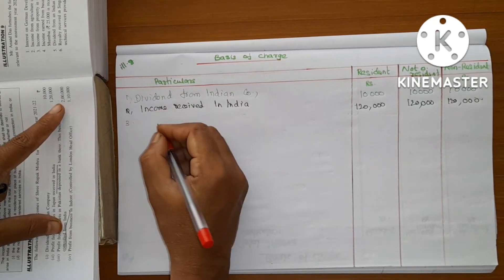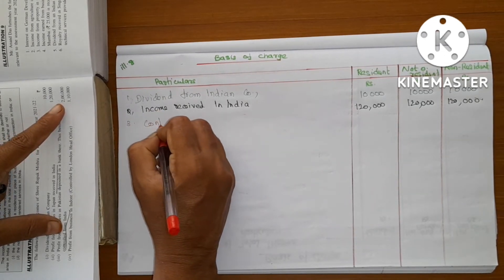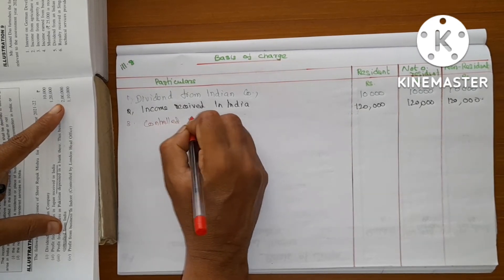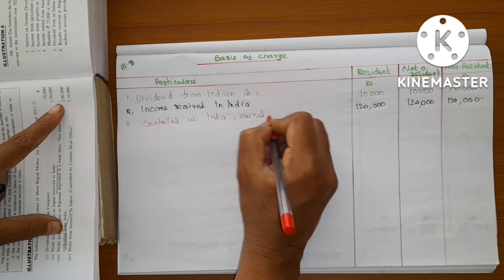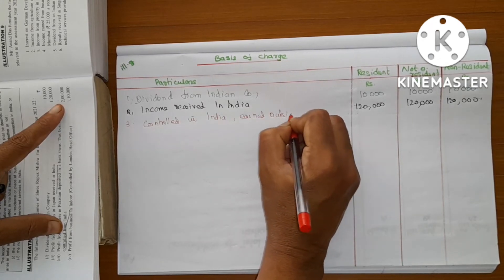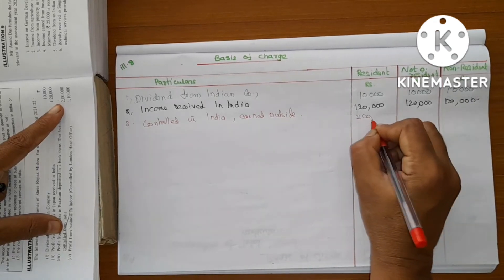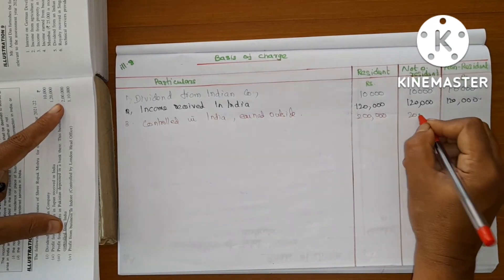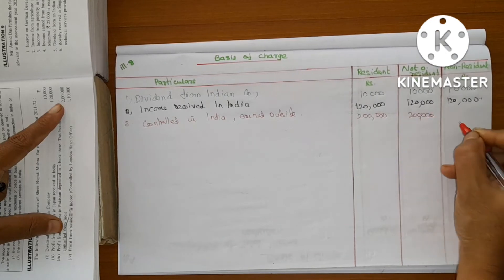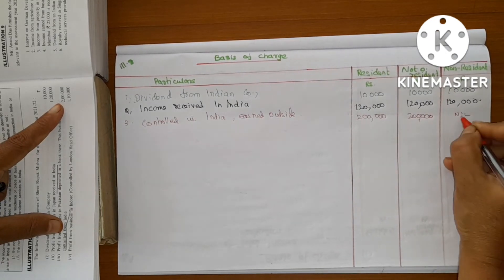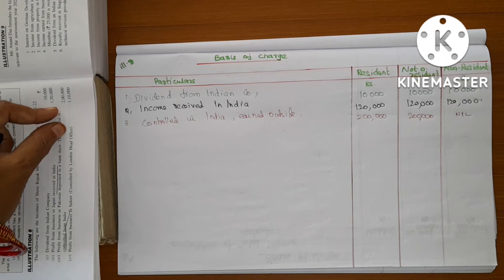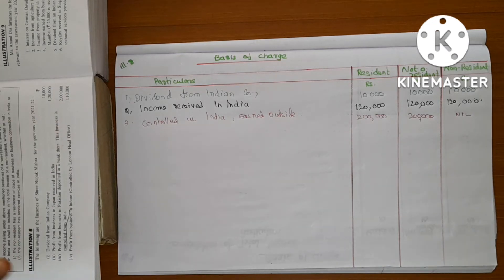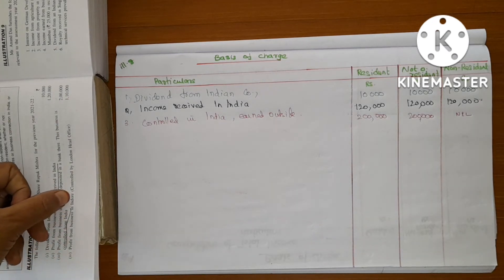Third item: control. Earned outside. Profit from business in Indore, controlled by London head office. Income earned and received in India — 1,10,000.